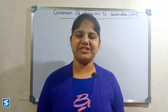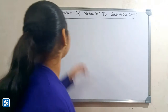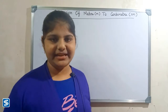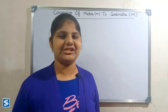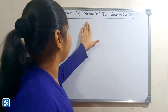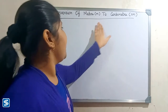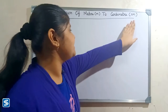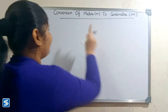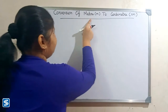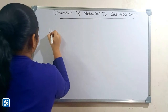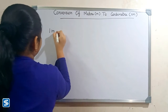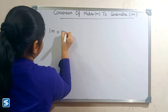Hi friends, welcome to Somesh channel. In this video I am going to teach how to convert meter into centimeter. Meter and centimeter are the units of length. The short form of meter is m and the short form of centimeter is cm. The formula for converting meter into centimeter is: one meter is equal to hundred centimeters.